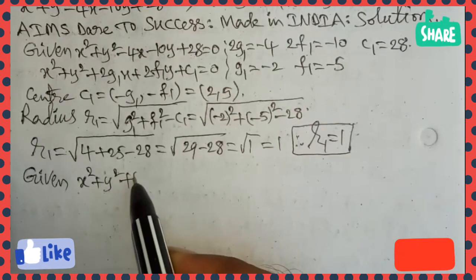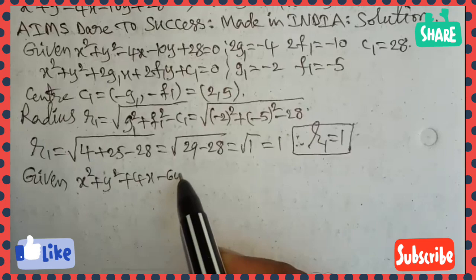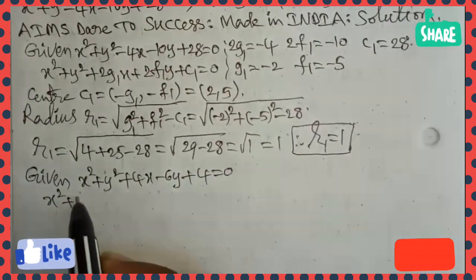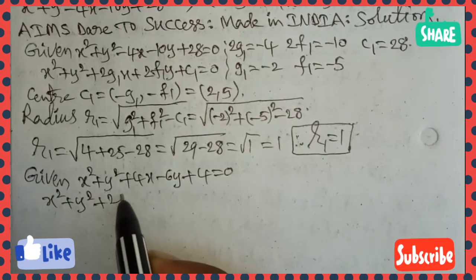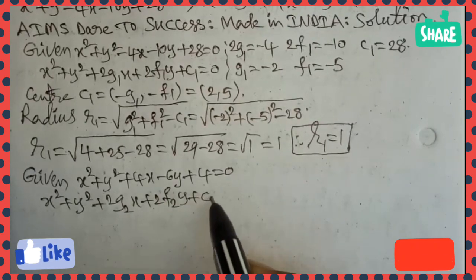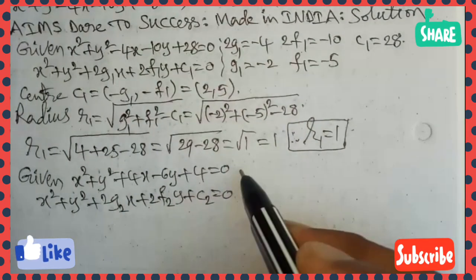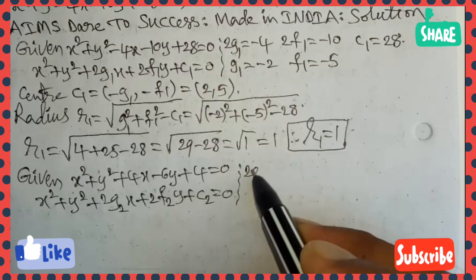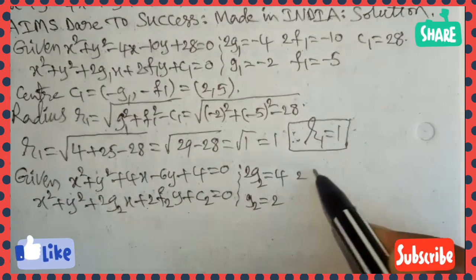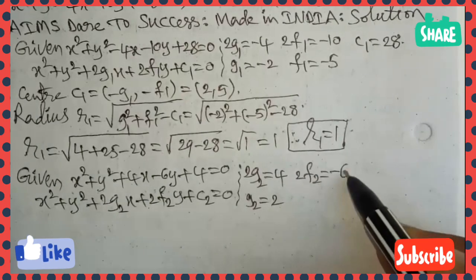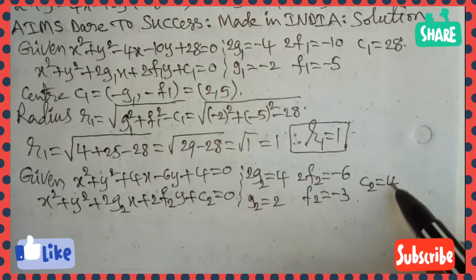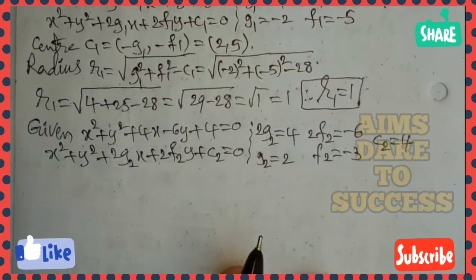The given second circle is x² + y² + 4x − 6y + 4 = 0. This is in the form x² + y² + 2g₂x + 2f₂y + c₂ = 0. Comparing x-coefficients: 2g₂ = 4, so g₂ = 2. Comparing y-coefficients: 2f₂ = −6, so f₂ = −3. Comparing constant terms: c₂ = 4.